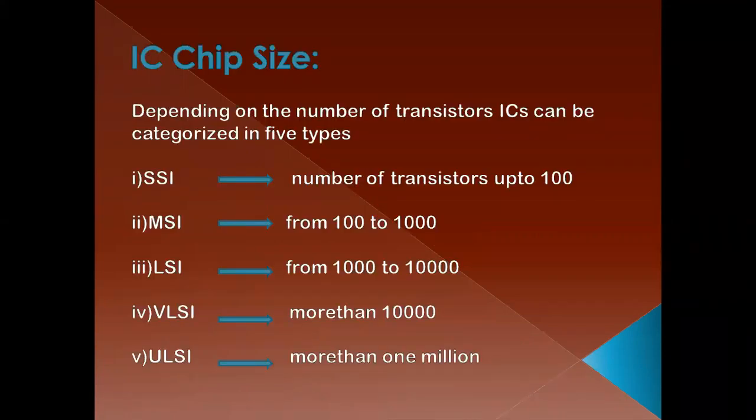In previous sessions, we have already discussed about what is an IC, what are the types of ICs, and what are the advantages of ICs. Along with that classification, we can also classify the ICs depending on the chip size. Depending on the number of transistors used in a chip, we can categorize the ICs as 5 types.